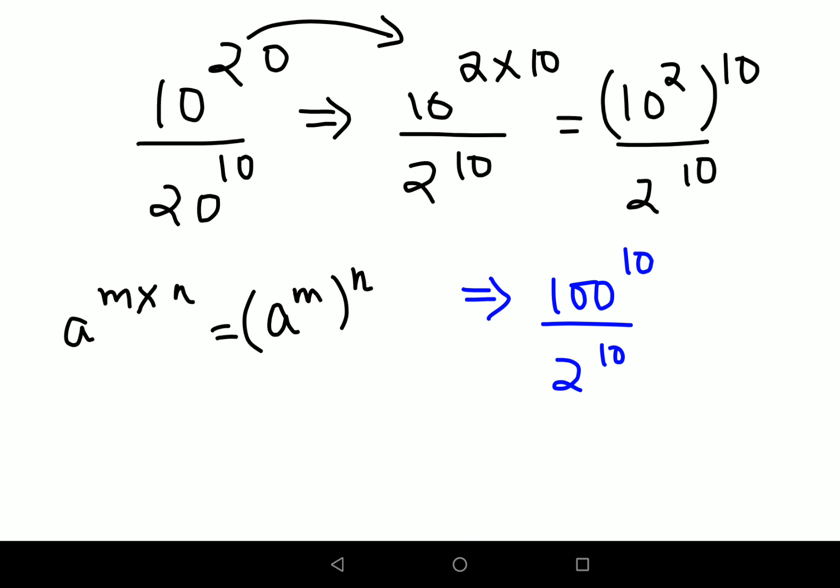m equals a divided by b, the whole raised to m. So this now looks like 100 divided by 2, the whole raised to 10. Now if you see, things can get cancelled.